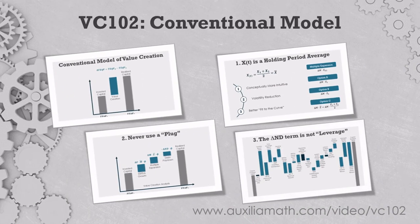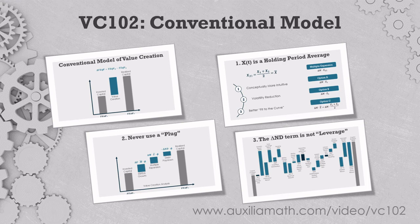This ends our general overview of the conventional model of value creation and the three rules that will make all your value creation models more robust and more meaningful: always use holding period averages in your value creation formulas; never use a plug to make the value drivers add up to the right number; and the delta ND term is not leverage. In the next episode, we'll look at a model from academia that uses the weighted average cost of capital in the IRR domain to separate the unlevered return and the leverage effect.